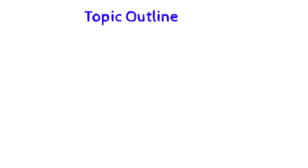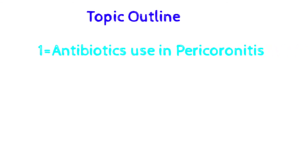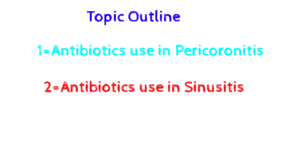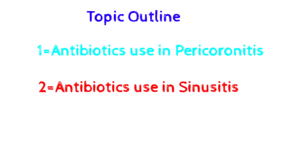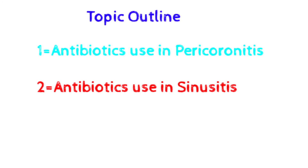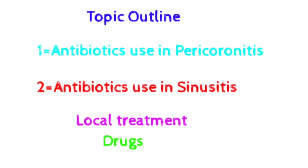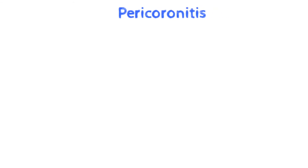Today's topic outline includes: number one, antibiotics used in pericuronitis; and number two, antibiotics used in sinusitis. Same as we studied in the first video, in every disease we first go for local treatment. If there is no systemic sign, we stay with local treatment. If there is a systemic sign like fever, then we go for systemic treatment — meaning we go for drugs.